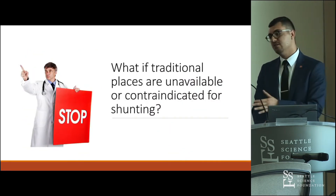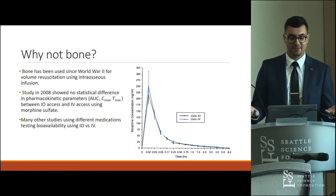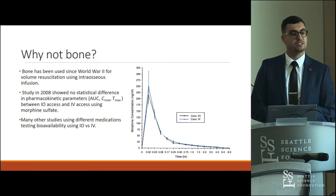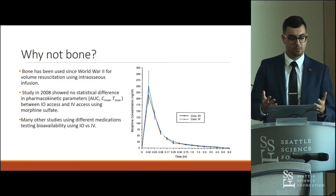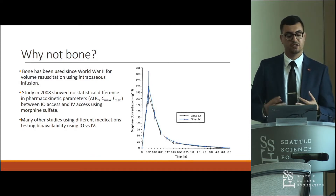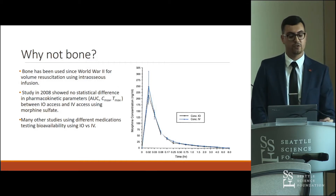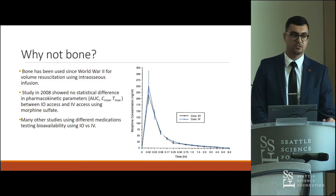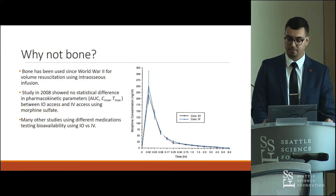So what if all of these sites are unavailable or contraindicated? Then maybe we should look at bone. Bone has been used for intraosseous infusions since World War II — just like the IO devices seen in the ED. A 2008 study showed no statistical difference in pharmacokinetic parameters using IO versus IV access when testing morphine, and another study using epinephrine showed equivalent bioavailability for IO versus IV.